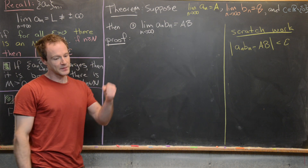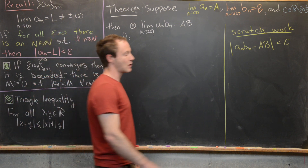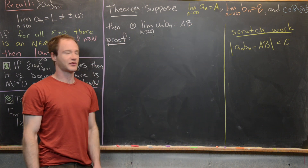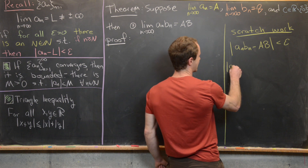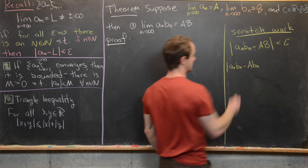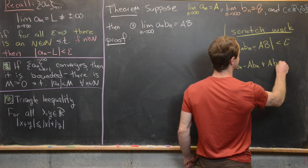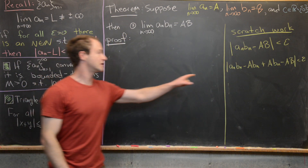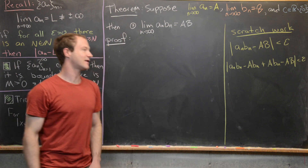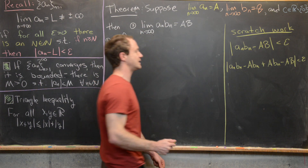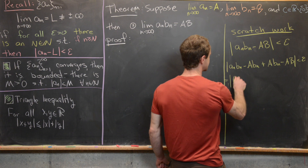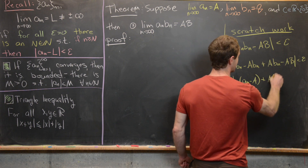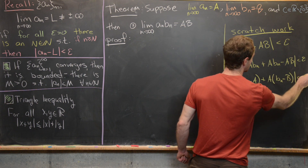We add and subtract a·bₙ, giving |aₙbₙ − a·bₙ + a·bₙ − ab| < epsilon. Factoring: out of the first two terms, factor bₙ; out of the last two, factor a. This gives |bₙ(aₙ − a) + a(bₙ − b)| < epsilon.